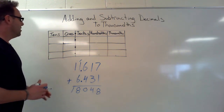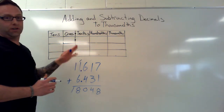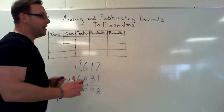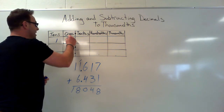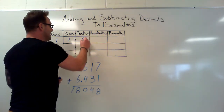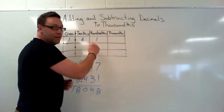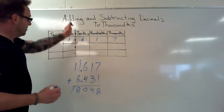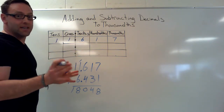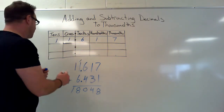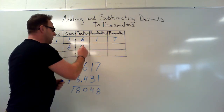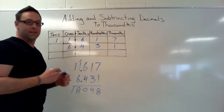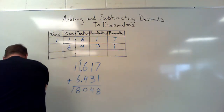Let's put that into our place value chart. I know you're thinking, oh no, another place value chart — it's okay, this is the best way. One in the tens, one in the ones, six in the tenths, one in the hundredths, and seven in the thousandths. The decimals are already lined up — that's the key to adding decimals. Six in the ones, four in the tenths, three in the hundredths, and one in the thousandths.